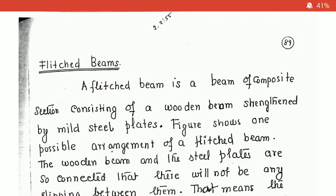Dear students, Module 6 is Flitched Beams, that is Composite Beams. This is what we are going to discuss.